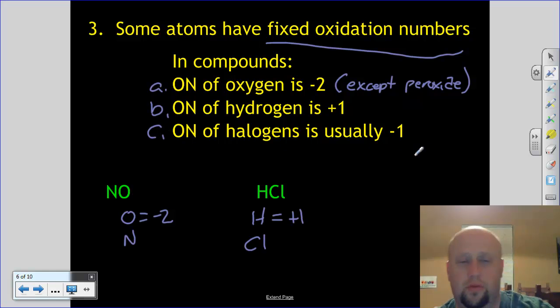So that's sort of the B part of C, or of rule three. And then C, oxidation number of halogens is usually negative one. Chlorine is a halogen, group 17, so it's going to be negative one.